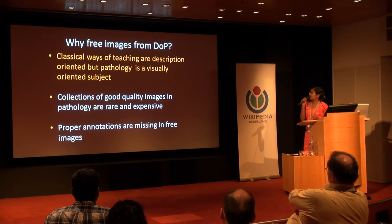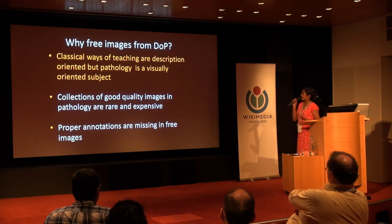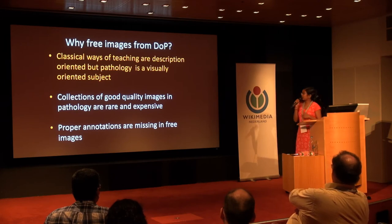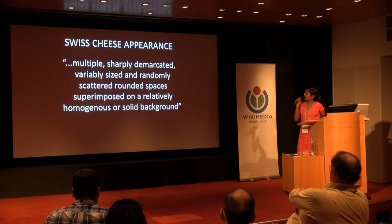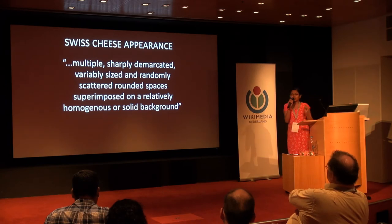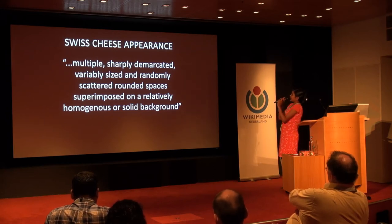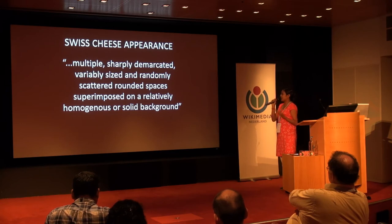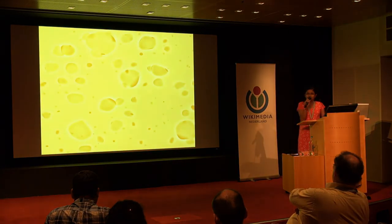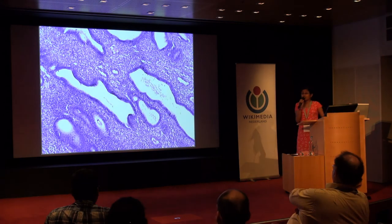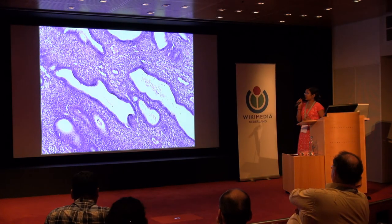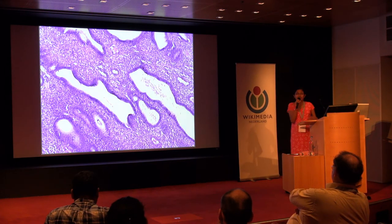So why did the department choose to give all these free images? Because the classical ways of teaching medicine are very description-oriented and very patient-oriented. But pathology, as you know from the previous images, is a very visually oriented subject — you cannot learn it without looking at the images. For example, there is a condition called endometrial hyperplasia. When you look through the microscope it is nicknamed the Swiss cheese appearance. The Robbins textbook of pathology, a standard textbook, describes it as 'multiple sharply demarcated, variable-sized, and randomly scattered rounded spaces superimposed on a relatively homogenous or solid background.' And if that description alone is what's coming to your mind, you are very wrong — it looks like this. Until you see the picture, you can never make out what it is.